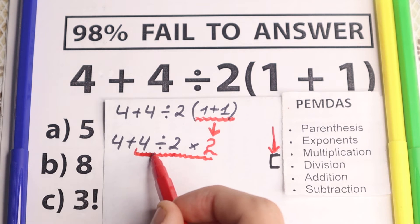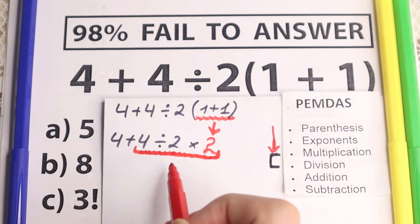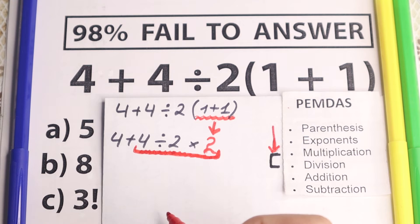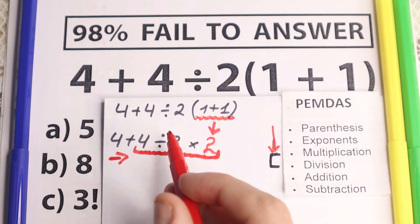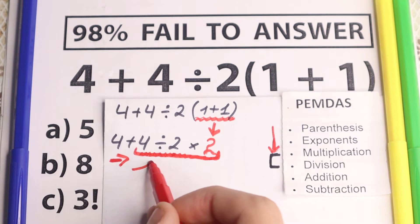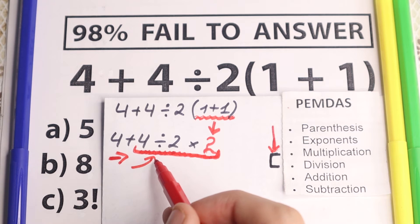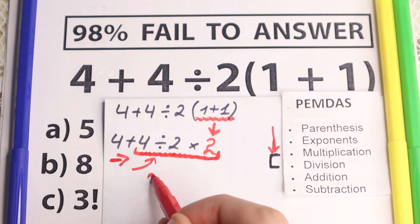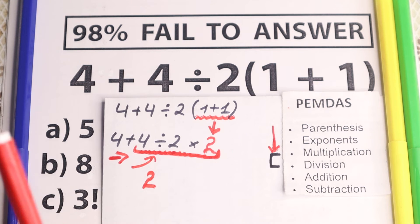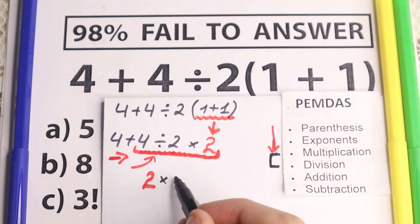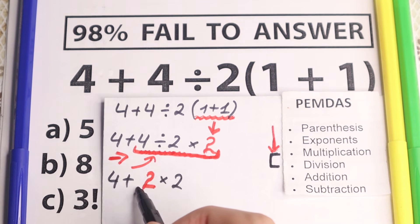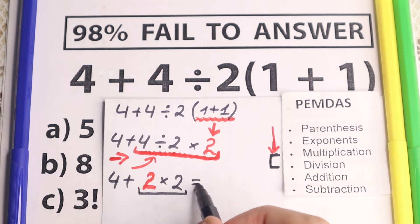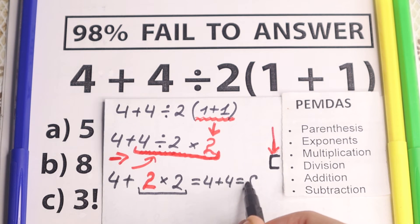We have addition first, then we have division here, and multiplication here. The question is: do we do multiplication first or division first? The answer is we scan from left to right — the first sign from left to right is division. So we divide: 4 divided by 2 equals 2. Now we have 4 plus 2 times 2. Before addition, we need to multiply first: 2 times 2 equals 4. So 4 plus 4 equals 8.